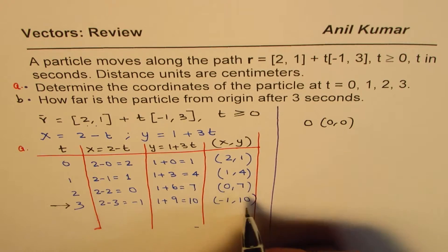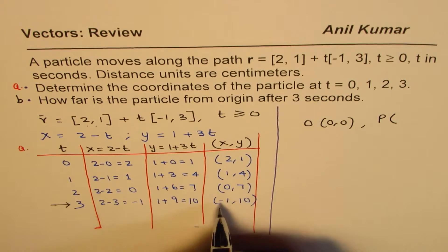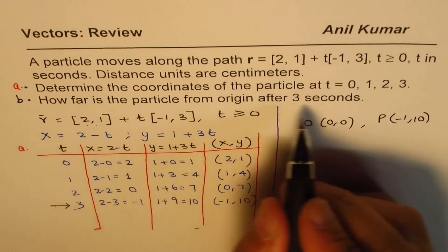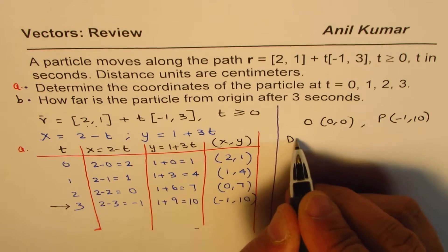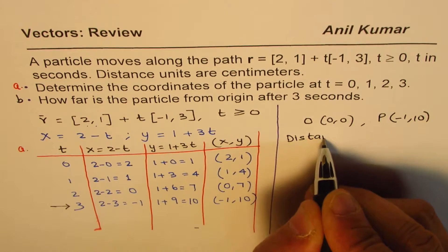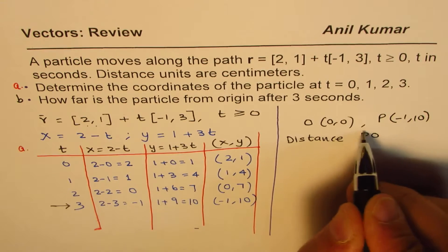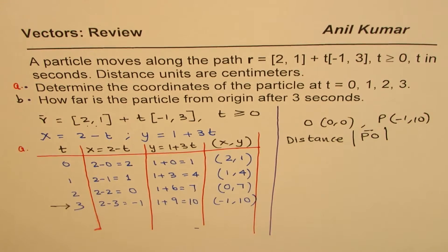And let's say this is the point P, which after 3 seconds, the point is (-1,10). So how far away? Basically, we need to find distance between this. So we need to find distance P, O. So that distance we need to find. That means the magnitude of this distance. That is what we need to find.